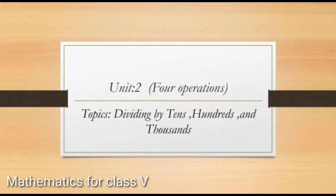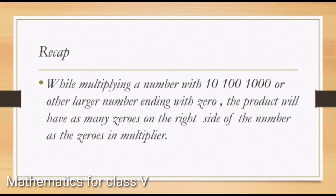We are studying unit number two, four operations, and today we are going to start the second topic of unit number two: dividing by tens, hundreds, and thousands. To recap previous knowledge: when multiplying a number by ten, hundred, or thousands, the product will have as many zeros on the right side as the zeros in the multiplier.